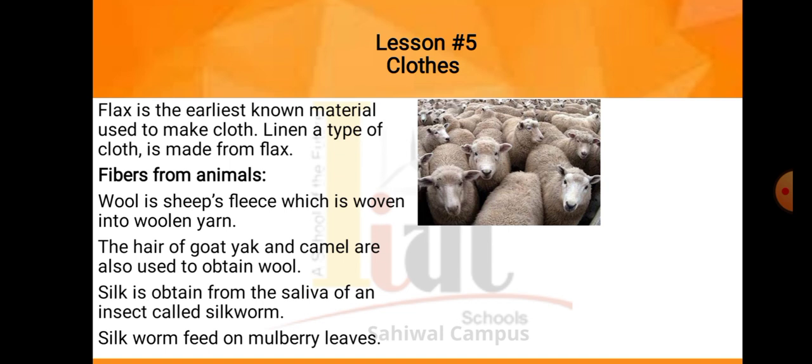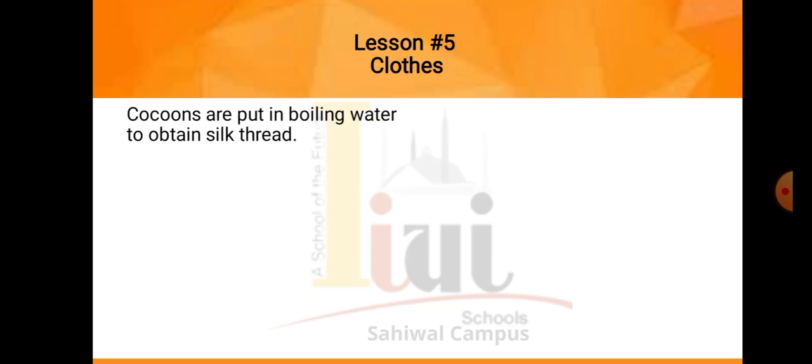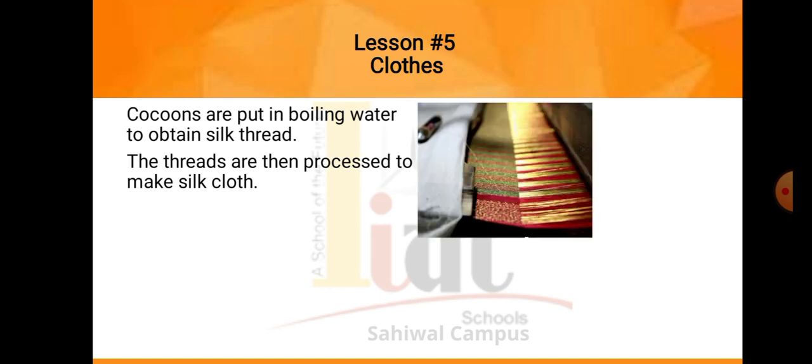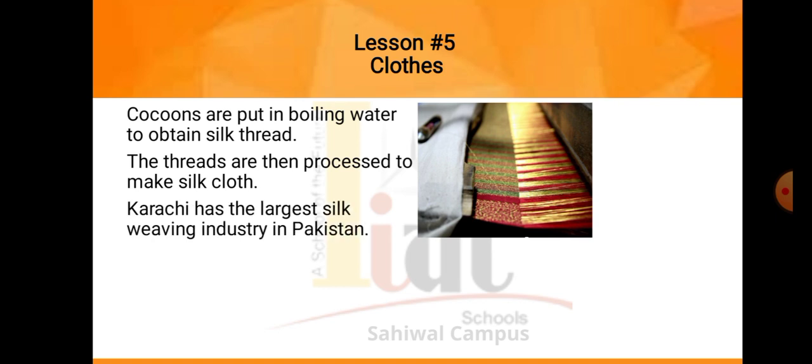Silkworm feed on mulberry leaves. Jo silkworms hotay hai, woh apna feed — yani apna khana — jo bhi unki feed hoti hai, woh mulberry leaves ke upar se letay hai. Cocoons are put in boiling water to obtain silk thread. Cocoons ek ball ki tarha hotay hai, aur inko agar ab boiling water mein dalen, yani ubaltay pani mein dalen, to yeh bilkul ek thread ki tarha khul jati hai, aur wo thread silk thread hoti hai. The threads are then processed to make silk cloth. Karachi has the largest silk weaving industry in Pakistan.